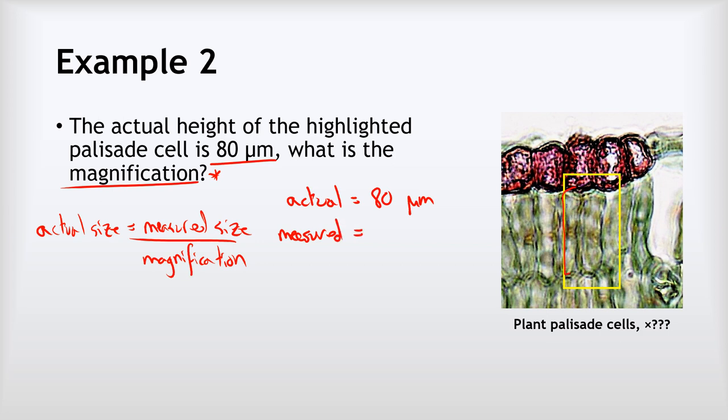Now you might be able to see the problem we've got here. We've got 80 micrometers and 40 millimeters. So we need to convert the units. It doesn't matter which way round. We could turn the micrometers into millimeters or the millimeters into micrometers. It doesn't matter which we do. I'm going to convert the micrometers into millimeters just to give you experience of doing the opposite conversion. So to convert micrometers into millimeters, we divide by a thousand because there are a thousand micrometers in one millimeter. And that gives me a value of 0.08 millimeters. So now I can substitute the 0.08 and the 40 into my answer. So the actual size, 0.08, equals the measured size, 40 divided by the magnification.